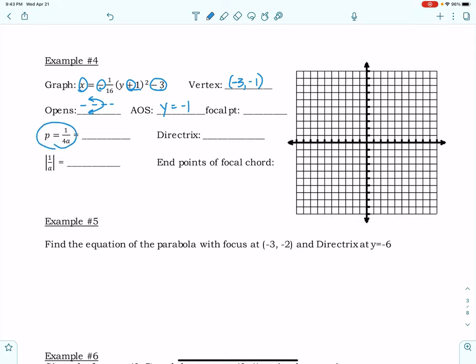Let's find p. So p is going to be 1 over 4 times 1 over 16 which gives me that reduces. So I get 1 over 1/4 which is 4. And then of course we want to find the absolute value of 1 over 1/16 which gives me 16. So the focal chord length is 16. We are going to find these points as we graph.